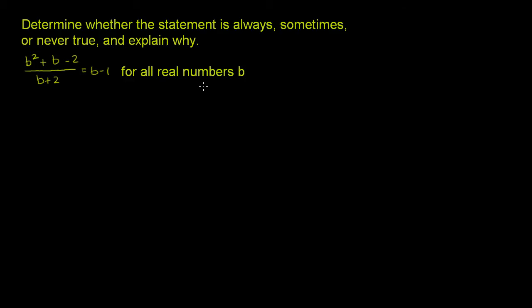Well, one thing that just jumps out at you, before you even try to manipulate this algebraically, is that I can think of a b value where this left expression won't be equal to b minus 1, a b value that will make this left expression undefined. And it becomes undefined if this denominator becomes 0. And the way the denominator is going to become 0 is if b is negative 2.